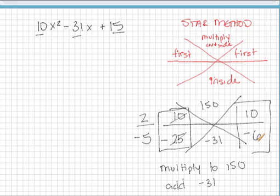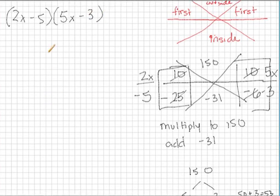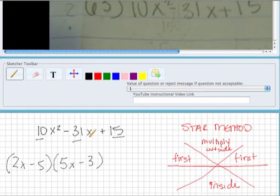10 and negative 6, looks like they have a common factor of 2. So if I factor 2 out of 10, I will get 5. And if I factor 2 out of negative 6, I will get negative 3. We're going to put an x next to the number on the top. And those are our factors. So this equation factors into 2x minus 5 times 5x minus 3. So that's the final answer for your first problem.